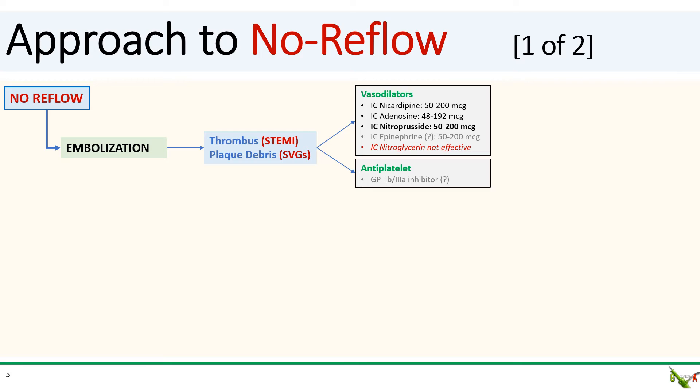I will generally add a glycoprotein 2b3a inhibitor in a no reflow situation, and that's to reduce the likelihood of forming microvascular plugs of platelets in the clogged microvasculature.